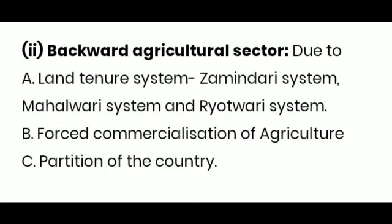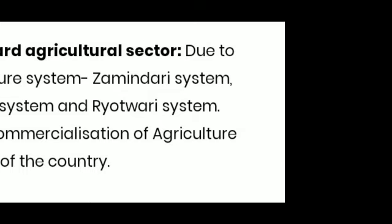Forced commercialization of agriculture. The main reason was that the Britishers needed raw material to feed the industrialization process taking place in Britain, and the Indian farmers were not paid fairly for their effort. The third setback to Indian agriculture was due to partition — most of the jute-growing areas went to Bangladesh, whereas the factories and industries remained in India, causing a shortage of raw material.